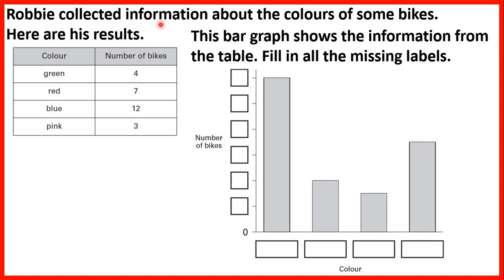Robby collected information about the colours of some bikes. Here are his results. This bar graph shows the information from the table. Fill in all the missing labels. From the table we can see that the largest number of bikes is 12 and that's the colour blue, so the largest bar on our bar graph must represent blue. The next largest is 7 and that's red bikes, so our next largest bar will be for the colour red.